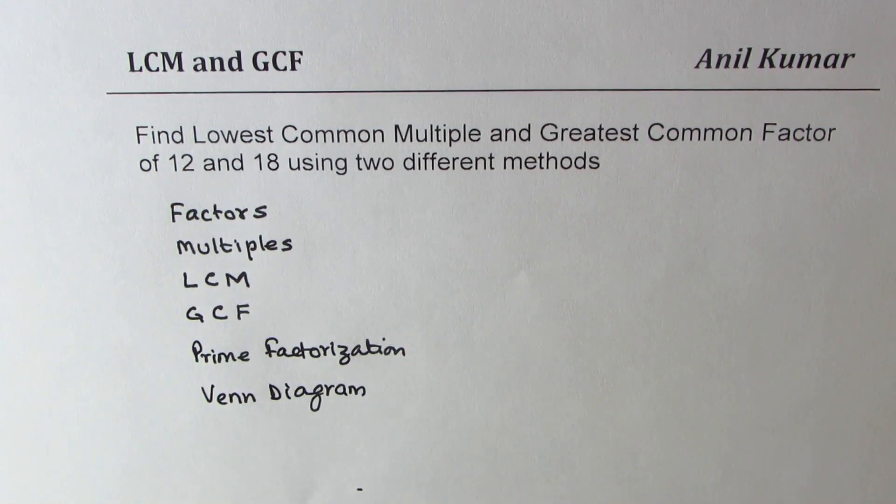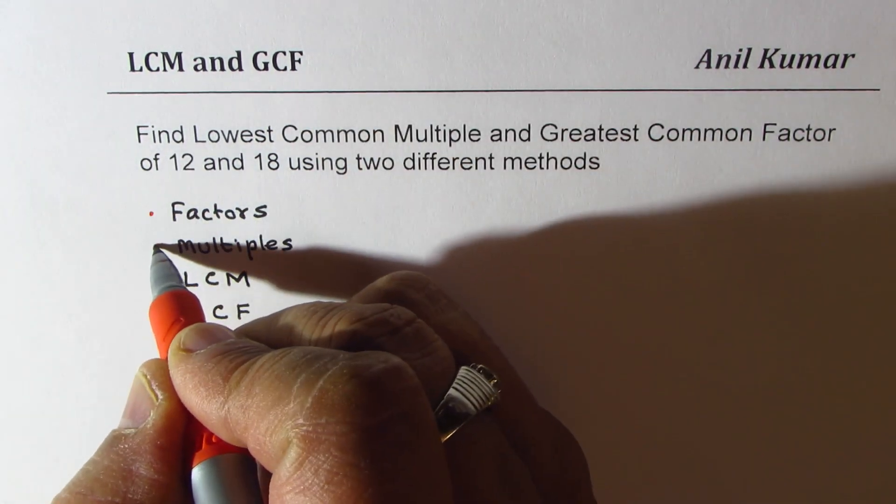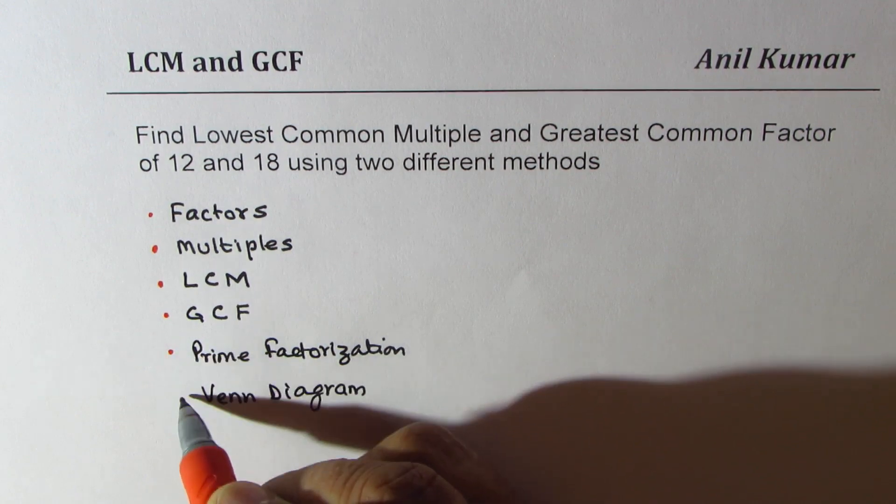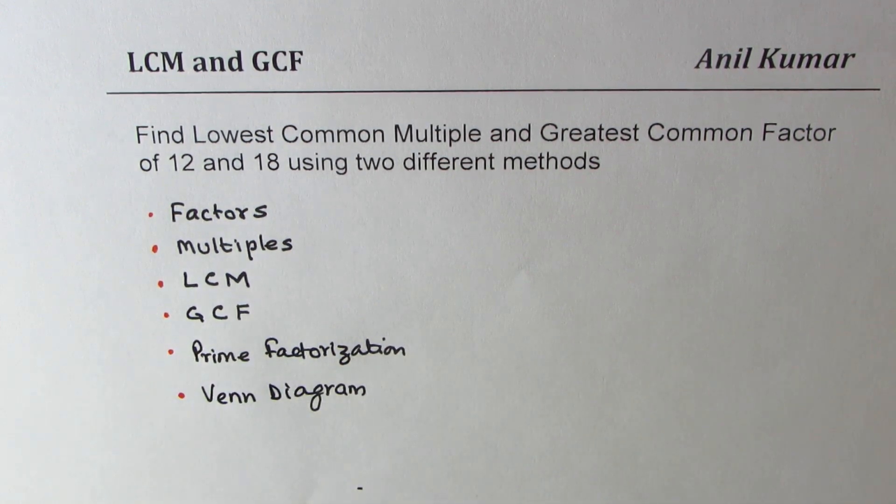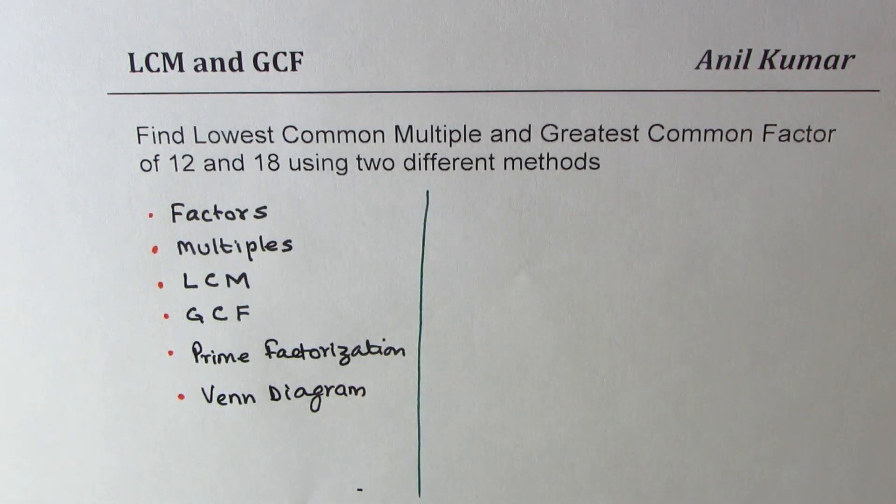This will help us find lowest common multiple and greatest common factor in different ways. Let's begin by first finding factors for the numbers given to us, 12 and 18.